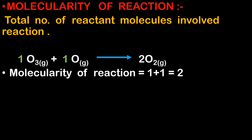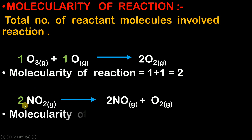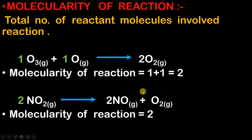In another equation, there are two moles of reactants present, so the molecularity of the reaction is two. Remember: you do not count the number of product molecules — you only count the number of reactant molecules, and that gives you the molecularity.